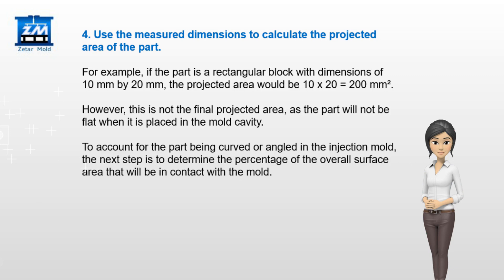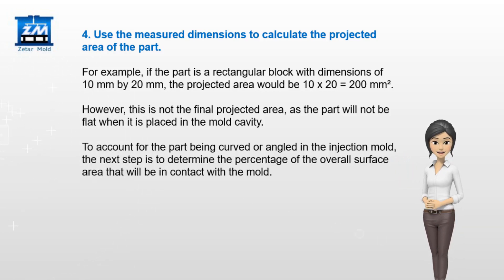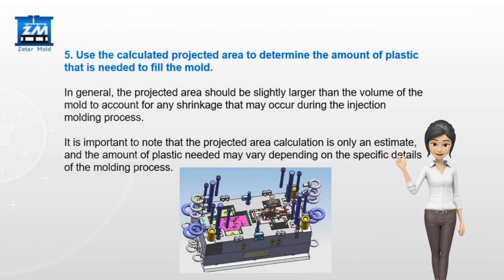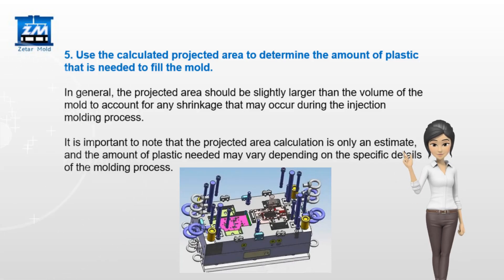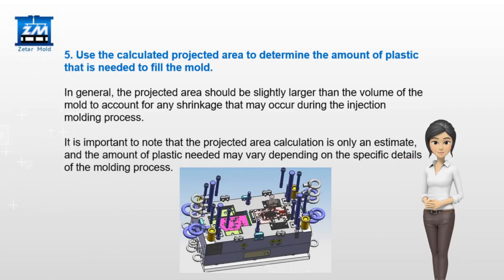However, this is not the final projected area, as the part will not be flat when it is placed in the mold cavity. To account for the part being curved or angled in the injection mold, the next step is to determine the percentage of the overall surface area that will be in contact with the mold. Use the calculated projected area to determine the amount of plastic needed to fill the mold. In general, the projected area should be slightly larger than the volume of the mold to account for any shrinkage that may occur during the injection molding process.